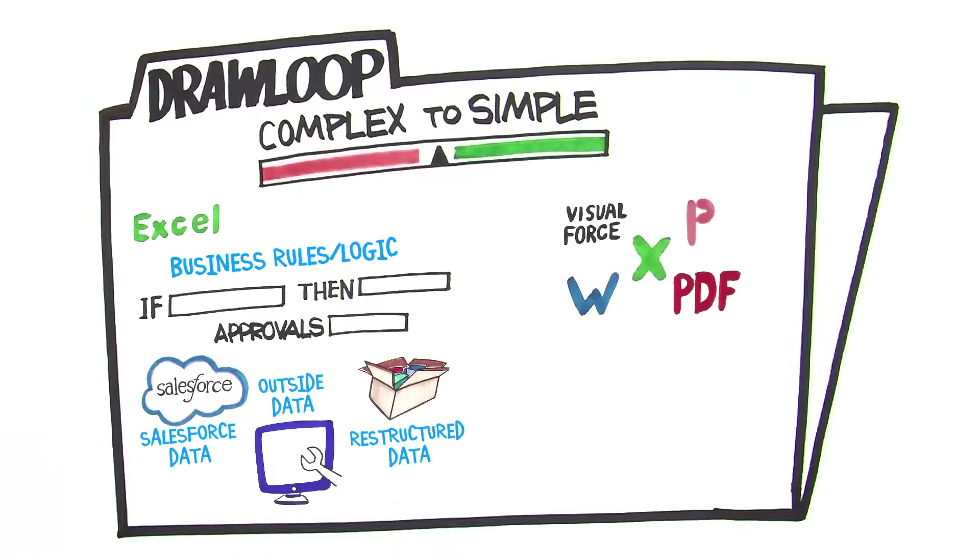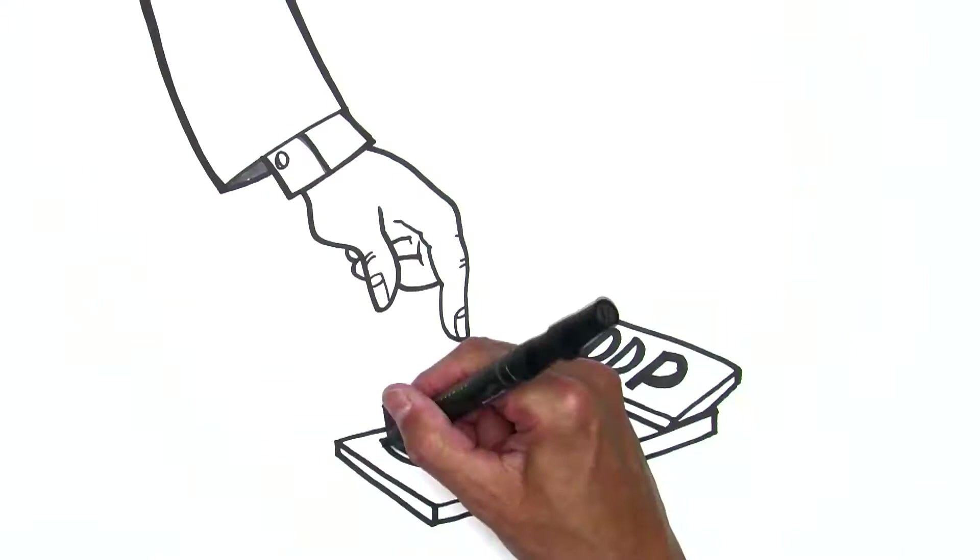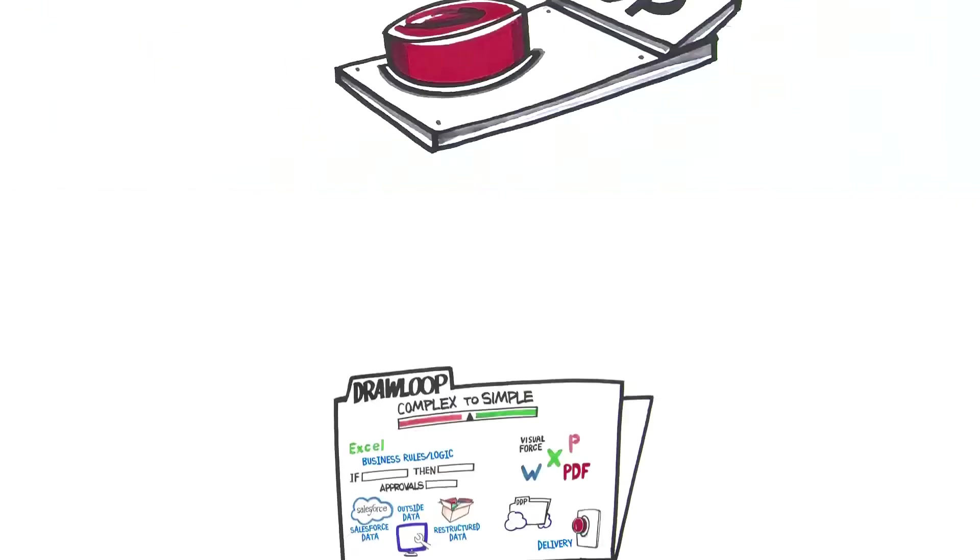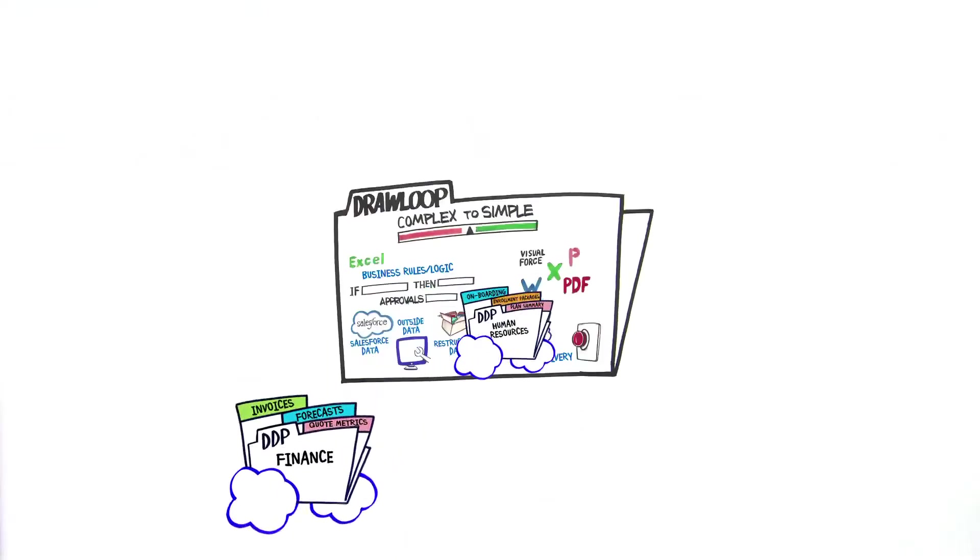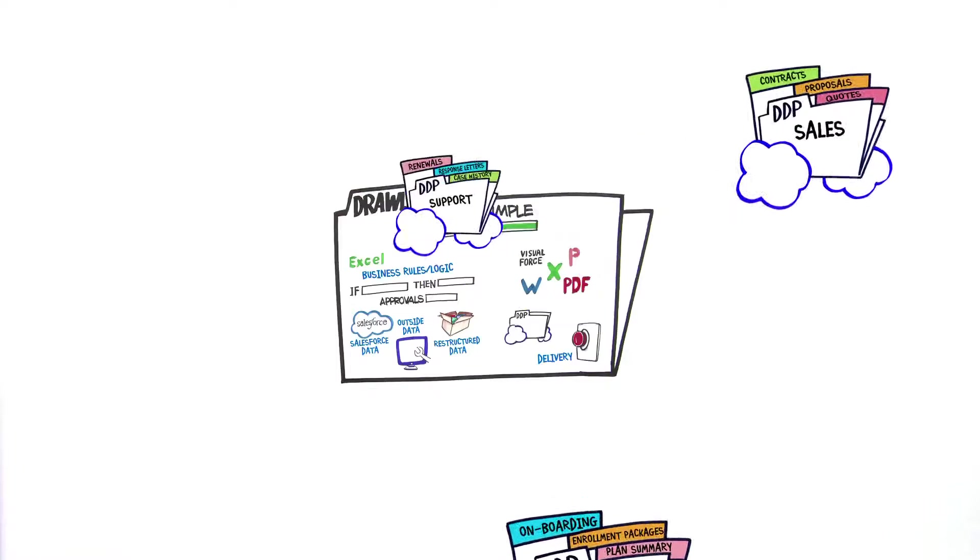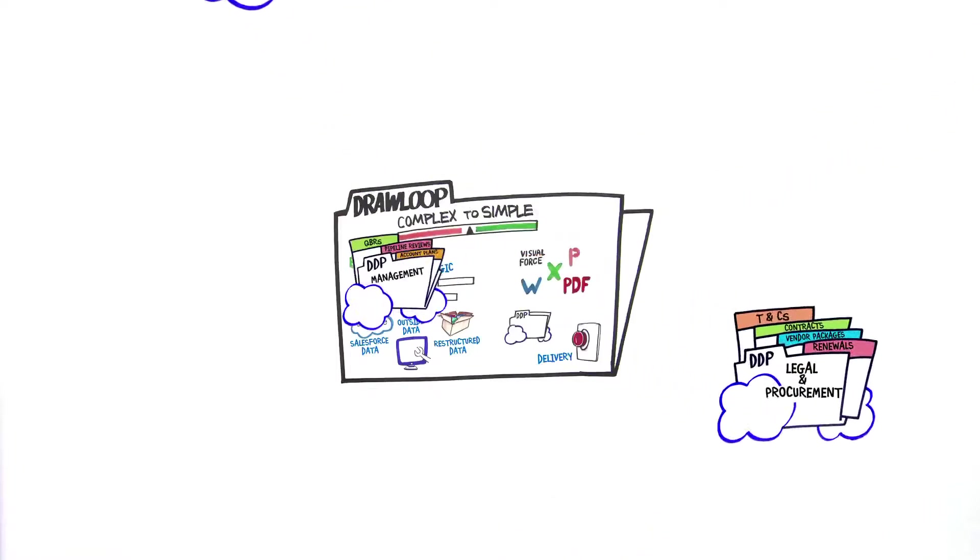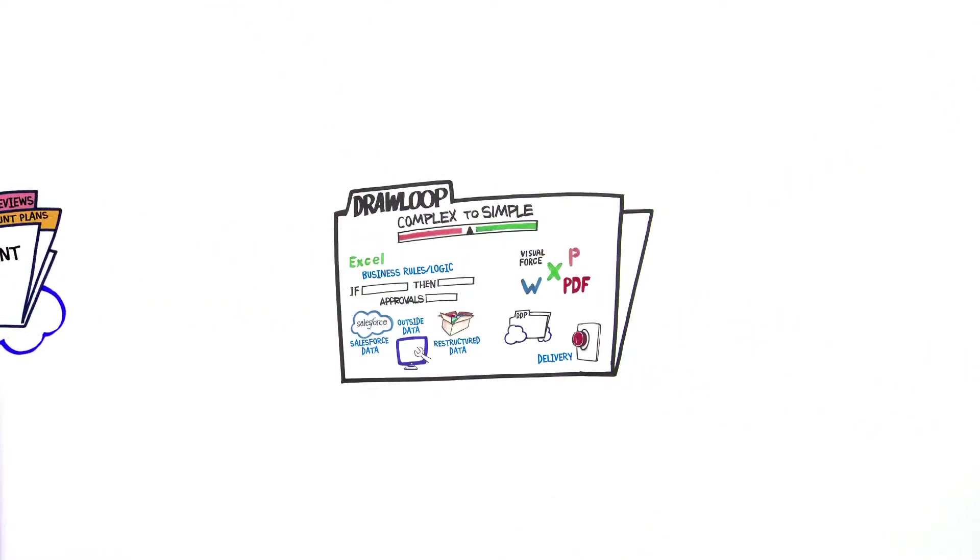It can be merged to any document and sent to any delivery. Drawloop ties it all together with a push of a button, dynamically pulling data from all of your sources to create a dynamic document package, or DDP. Deliverable anytime, anywhere, by anyone in any department.